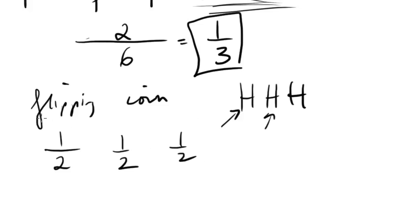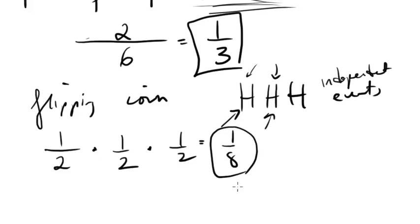Well, for this situation, when these are independent events, in other words, when this coin flip doesn't affect the outcome of this coin flip, they're separate. We simply multiply the probabilities. So in this case, it'd be 1 half times 1 half times 1 half, which would be 1 over 8, and that would be the answer. So when they're independent events, you just multiply the probabilities of the different individual events.